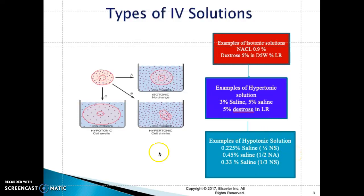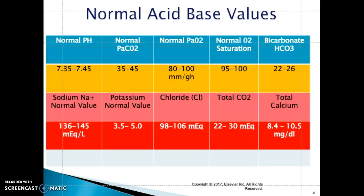Now let's look at normal acid-base values. Normal pH is 7.35 to 7.45; PCO2 is 35 to 45; PaO2 is 80 to 100; O2 saturation is 95 to 100%; HCO3 (bicarb) is 22 to 26. Sodium is 136 to 145; potassium is 3.5 to 5; chloride is 90 to 106; total CO2 is 22 to 30; and total calcium is 8.4 to 10.5 mg/dL. Please refer to your Potter and Perry textbook for these values.